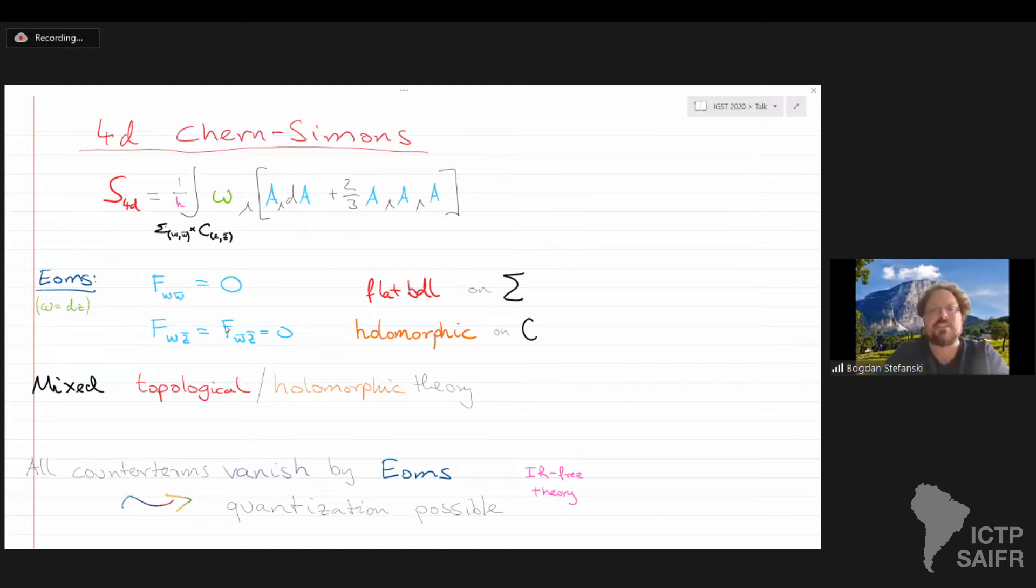So in this talk, you'll see that W and W bar are going to play the role of the string world sheet, and Z is going to be the spectral parameter that all these integrable systems have. Okay. So let's see a little bit more detail. So let's look at the equations of motion of this theory when Omega is just equal to dz. Well, in the W, W bar plane, this is just your typical Chern-Simons simplicity, right? There are no local degrees of freedom. You have a flat bundle on Sigma, which is these W, W bar coordinates. On the other hand, you have these Lax equations here, which involve the Z bar derivative, but they don't involve dz terms. And so these two equations just tell you how this flat bundle on Sigma, how does it vary when you move around the complex plane C.